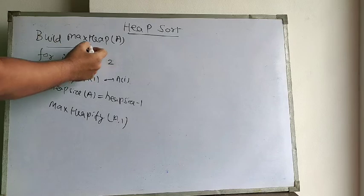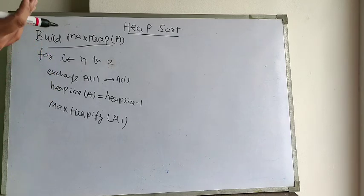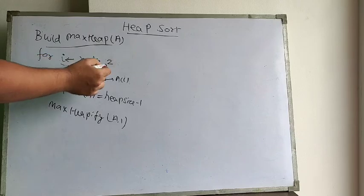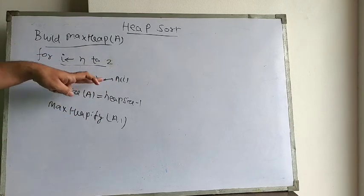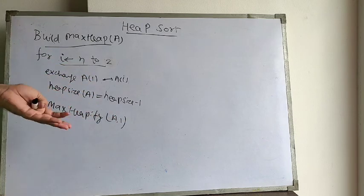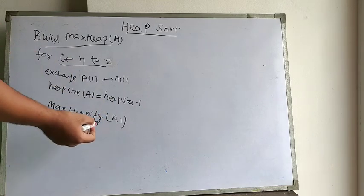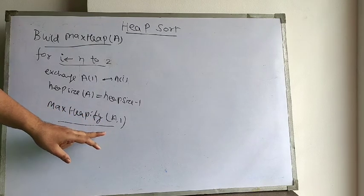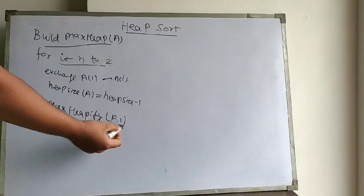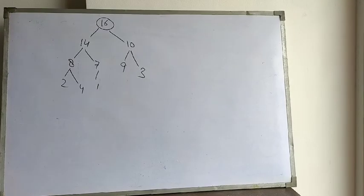In this pseudo code, to do a heap sort first we need to build a max heap. Either you can use a max heap or min heap — that depends on the requirement, whether you want to sort in increasing or decreasing order. For sorting in increasing order we need to create a max heap. Then we start from the very last element, exchange the first and last elements, reduce the heap size by one every time we extract a sorted element, and again create a max heap using max heapify from the very first element.